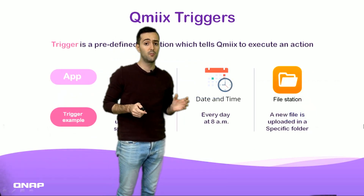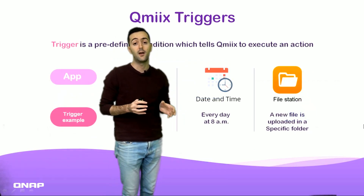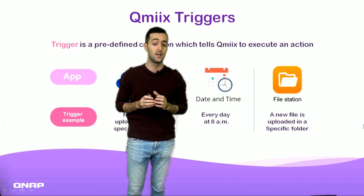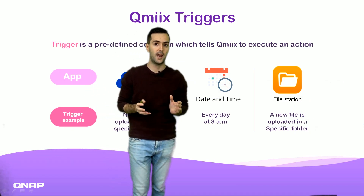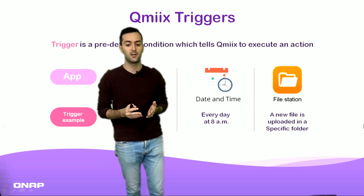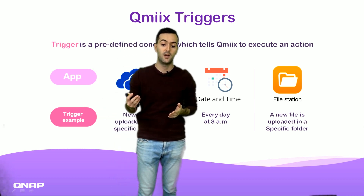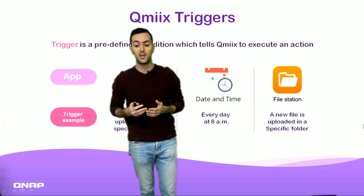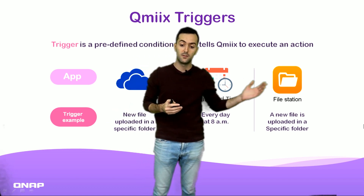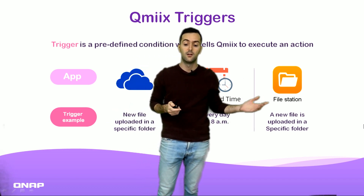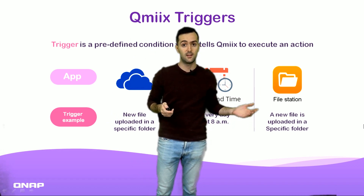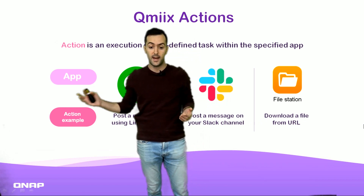QMix triggers are predefined conditions which tell QMix to execute an action. You can specify the date and time, the communication channel you want to use, and define a trigger such as a new file being uploaded to File Station, which then leads to the action being performed.